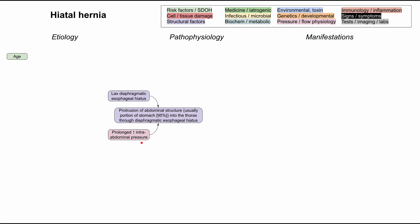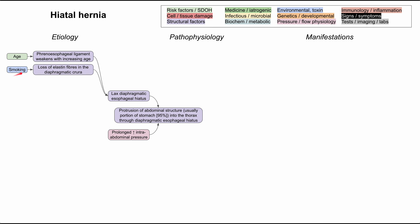In terms of things that cause a lax diaphragmatic esophageal hiatus, age is the first risk factor. As we get older, our phrenoesophageal ligament weakens, and that's what predisposes you to hiatal hernia. Smoking is another risk factor — if you smoke, you end up with weaker elastin fibers in the diaphragmatic crura. The diaphragmatic crura are tendons connecting the diaphragm to the vertebral column, and they're important for maintaining the strength of the esophageal hiatus.